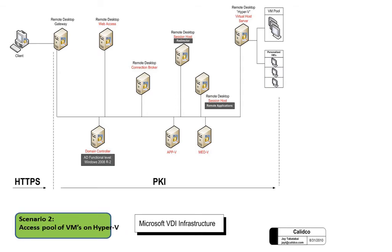The next scenario is when a user wants to access a pool of VMs — virtual machines residing in a pool on Hyper-V. With a VM pool, any session could be a Windows 7 desktop; there's no difference which one gets assigned to which user. A typical use case would be a call center where everybody has the same desktop image and uses the same applications.